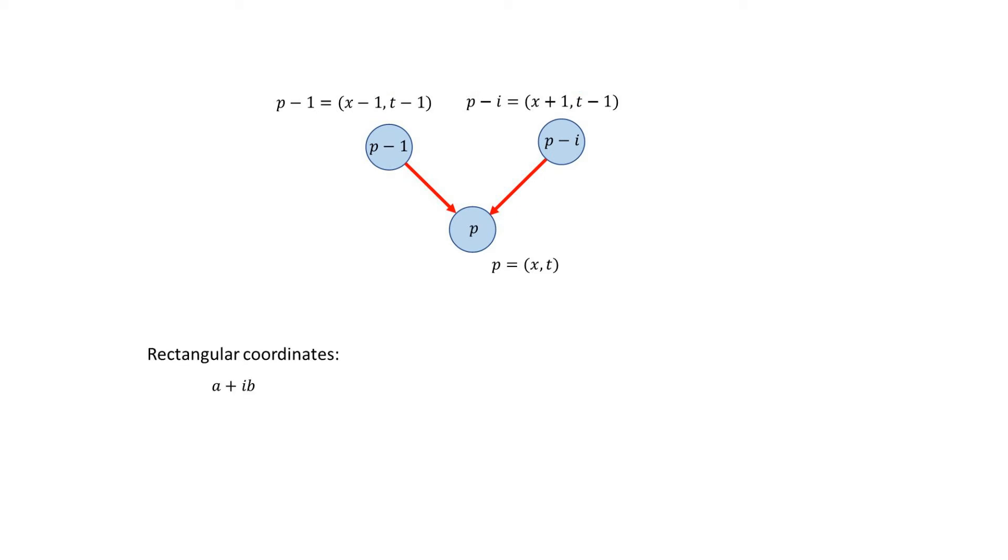In rectangular coordinates, a point p is a complex number a plus ib. In spacetime coordinates, this would be x comma t. We can easily convert between them.